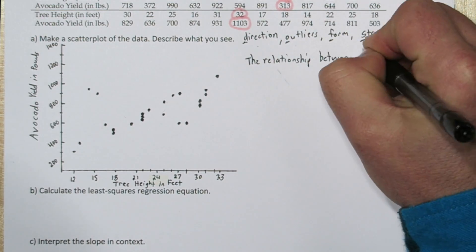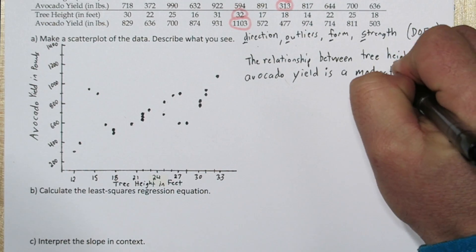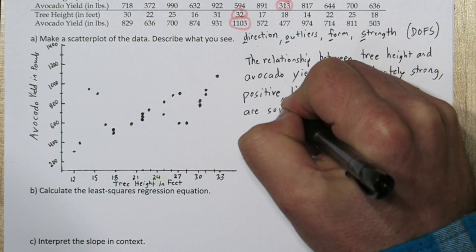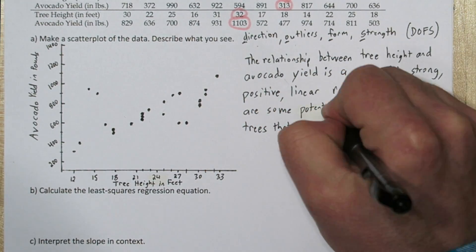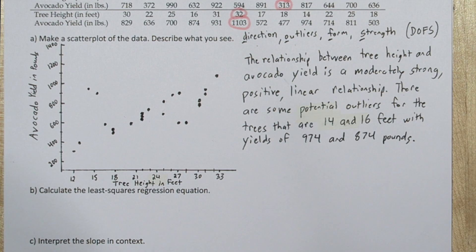So we'll say the relationship between tree height and avocado yield is a moderately strong positive linear relationship. There are some potential outliers for the trees that are 14 and 16 feet, with yields of 974 and 874 pounds.